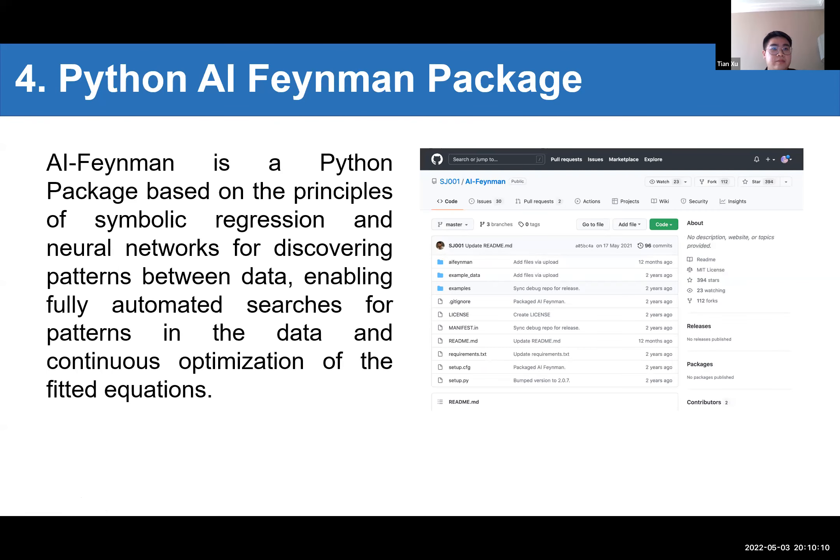AI Feynman is a Python package based on the principles of symbolic regression function and neural networks for discovering patterns between data. It enables fully automated search for patterns in the data and the continuous optimization of the fitted equations. And on the right side, this is the snapshot of GitHub for the AI Feynman, which was given by the sponsor at the beginning of the project. We use this GitHub to know more about AI Feynman and know how to use it in Python.